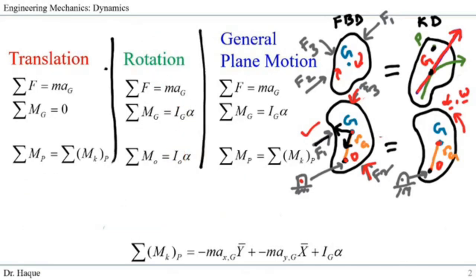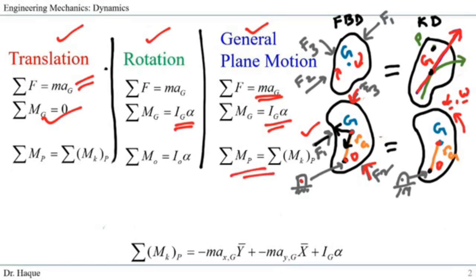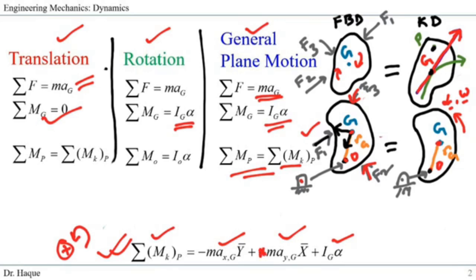Finally, general plane motion is a combination of translation and rotation. We have the summation of force equals M·a_G with X and Y components from translation. Instead of the moment about Z being 0, we now have the rotation part: summation of moment about point Z equals I_Z·alpha. We can also take the moment about any point on the body, which equals the kinetic moment about that point. The full kinetic moment equation is active because we have both rotation and translation. Assuming counterclockwise positive, the equation includes negative M·a_X·y-bar, positive M·a_Y·x-bar, and I_Z·alpha.